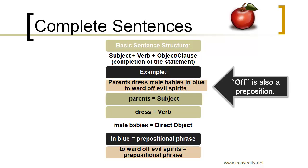Let's look at what we mean by complete, good, well-written sentences. Remember the basic structure: subject plus verb plus object, or some other words, clauses, or phrases that complete the statement. This is the basic, simple structure. Sentences can get more complex — you can add prepositional phrases or put things in different order. But here we're focusing on the basic straightforward sentence structure. Here's an example sentence: 'Parents dress male babies in blue to ward off evil spirits.'